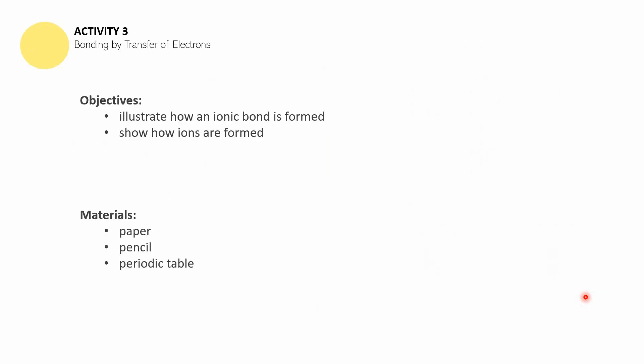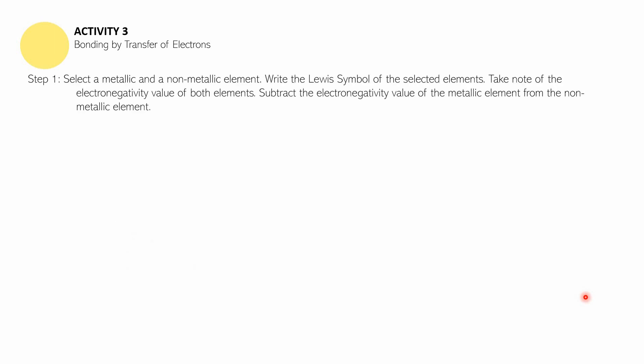We now move on to Activity Number 3: Bonding by Transfer of Electrons. The objectives are: first, you should be able to illustrate how an ionic bond is formed; and second, you are supposed to show how ions are formed. The materials you will be needing are a piece of paper, a pencil, and the periodic table. Step one is to select one metallic and one non-metallic element from your periodic table.